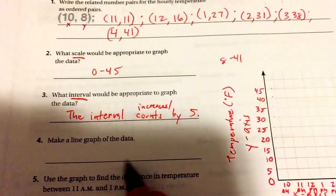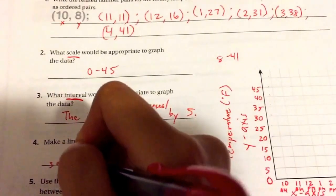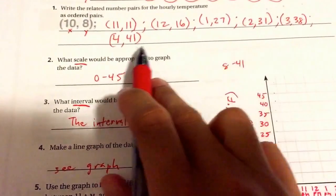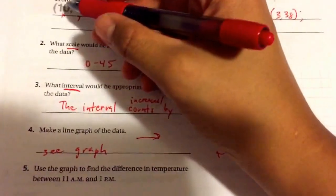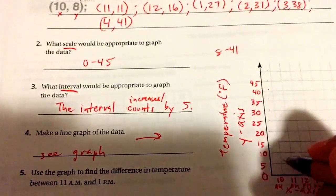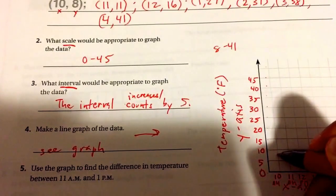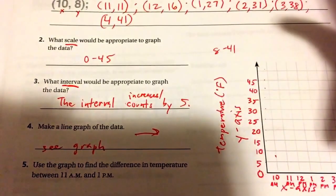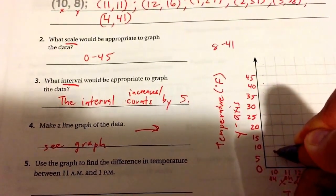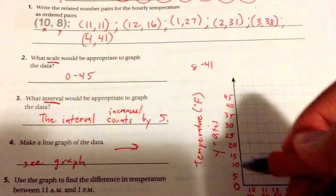Now, the next part is make a line graph of the data. Your answer will be the graph. And what they want you to do is plot all of these numbers right here, and then connect them. So the first one you're plotting is 10, 8. Keep in mind, the 10 tells you you're going to start here, and the 8 tells you you're going to be 5, 6, 7, 8. 8 is close to the 10. It's actually right in the middle of 5 and 10. So I'm going to put 8 right in the middle. So I graphed the first one, 10, 8.